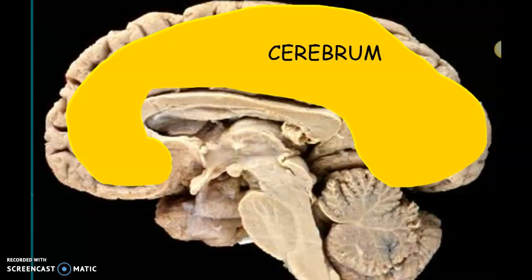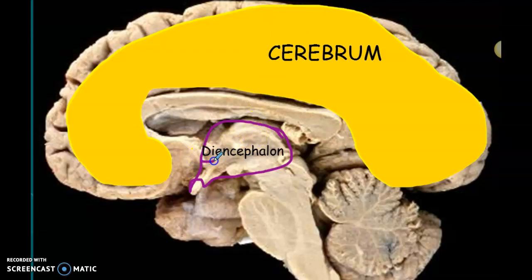The second part of the brain I'm supposed to teach is this guy in purple right here. This is called the diencephalon. The reason it's called the diencephalon is because 'di' means two and 'cephalo' means head — so these are two parts in your head. I like to call this the two-headed dragon. The main part is called the thalamus, and this other part is called the hypothalamus because it's just a little bit below the thalamus. Together they make the two-headed dragon.